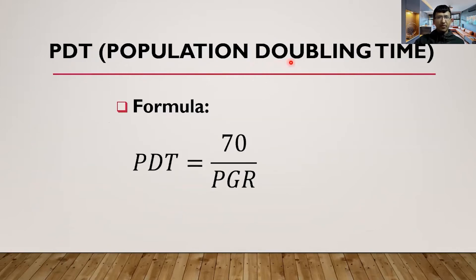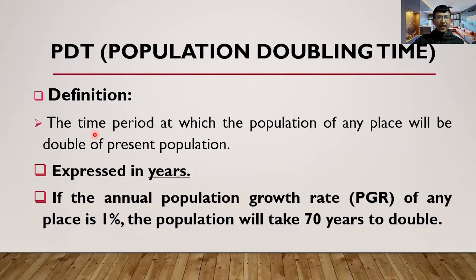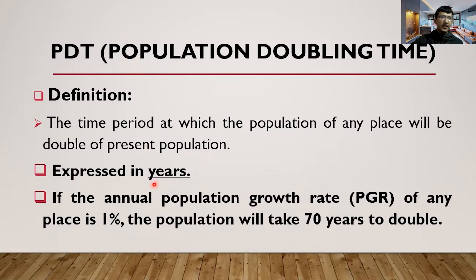The next measure is Population Doubling Time. The formula is: Population Doubling Time = 70 / PGR, where PGR means annual population growth rate. Population doubling time is the time period at which the population of any place will be double the present population. For example, if the population is one lakh now, in how many years will it become two lakhs — that time period is called population doubling time.